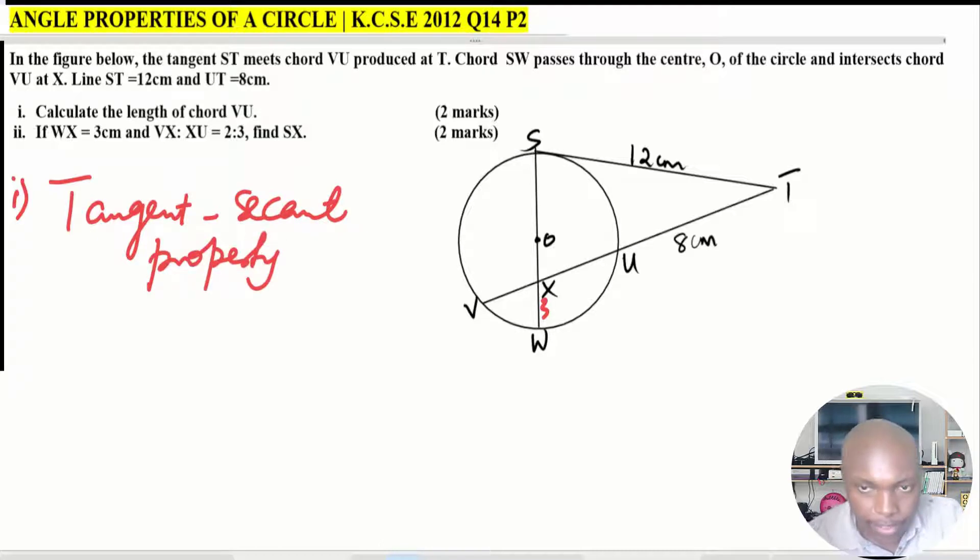We're going to extract the tangent-secant property from the figure. So tangent ST, VT, and secant VT. VT times UT equals ST squared. That is the property that is going to assist us.